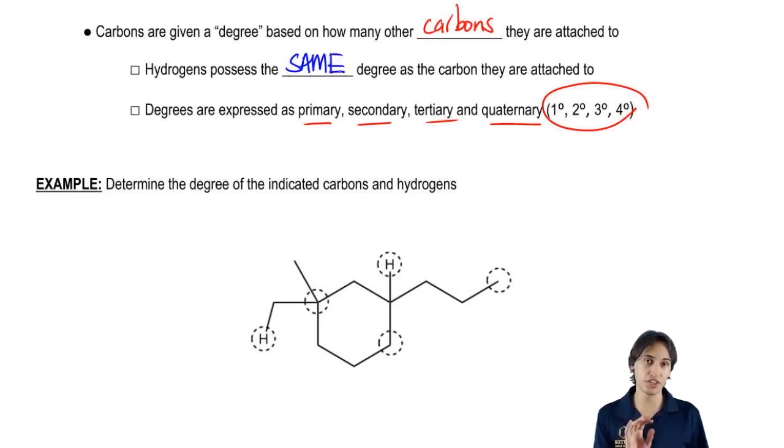So what that means is if I have a tertiary carbon, that means it's attached to three other carbons, the hydrogen that's on that tertiary carbon would be called a tertiary hydrogen as well because it's a hydrogen of a tertiary carbon.